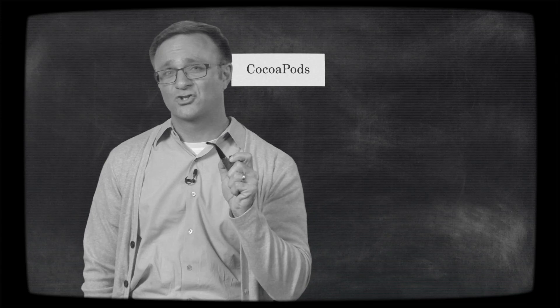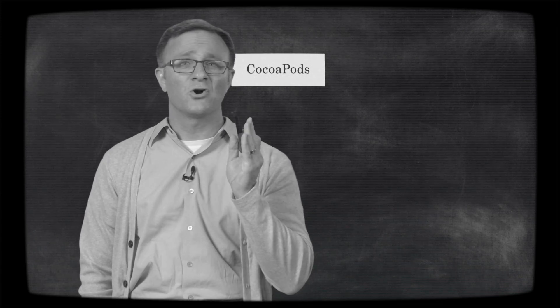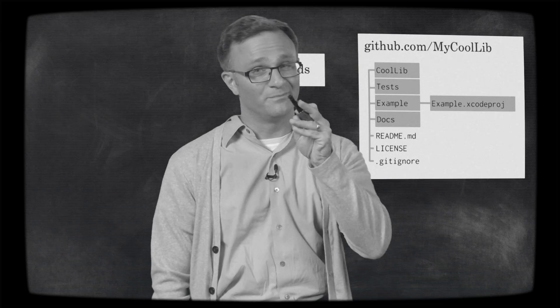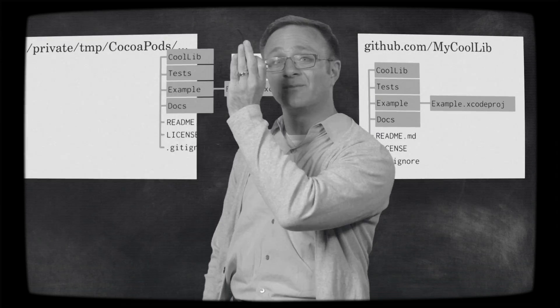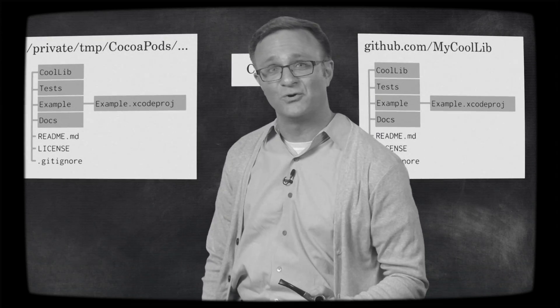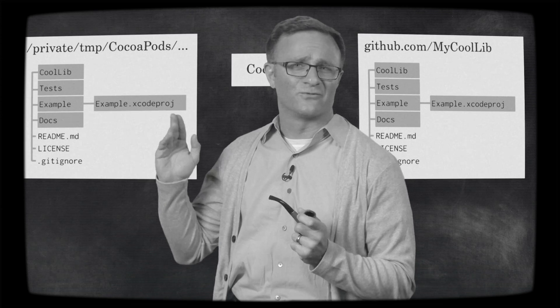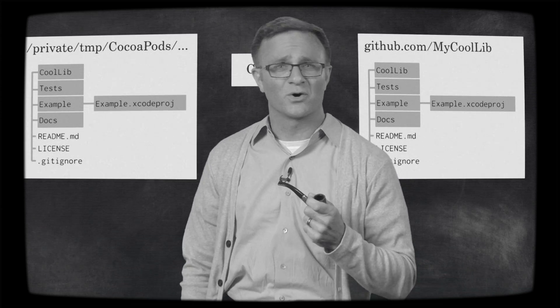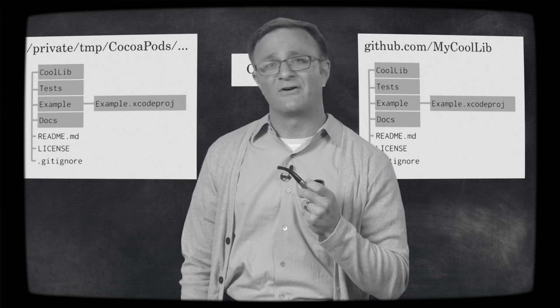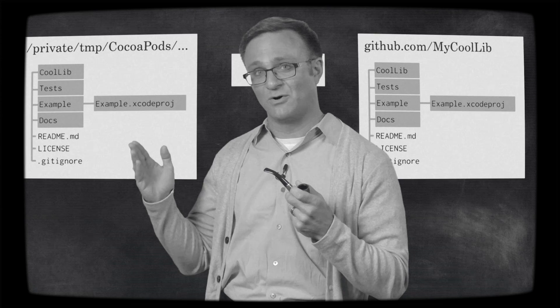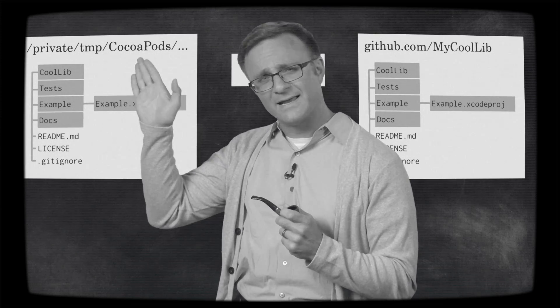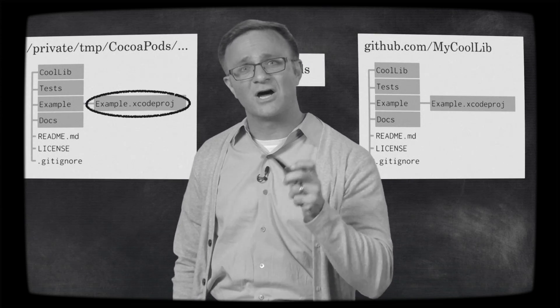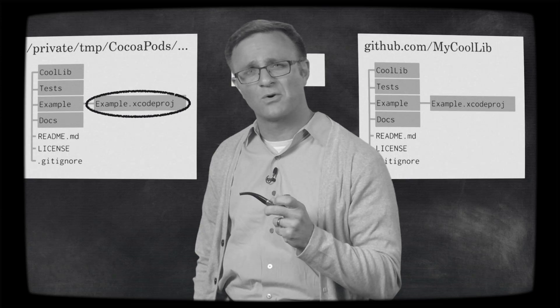Just imagine. If you run Podtry on a third-party library, CocoaPods will go out to that library's set of project files — usually on GitHub, but not always — and download them to a temporary directory on your computer. Once there, it will scan them for anything that looks like an Xcode project or workspace, preferably in a directory named something like demo or example. If it finds one, Podtry will open that project in Xcode so you can see how it works.